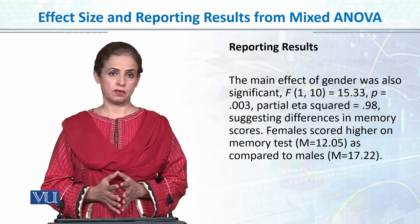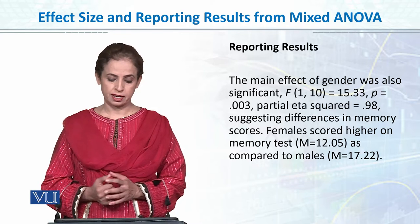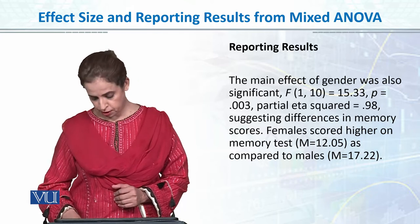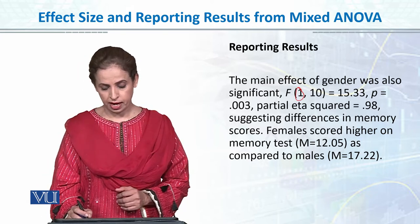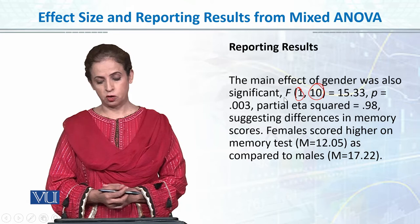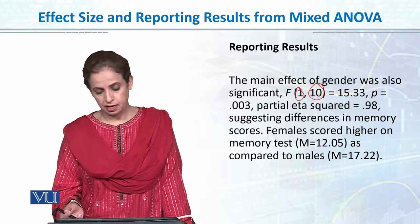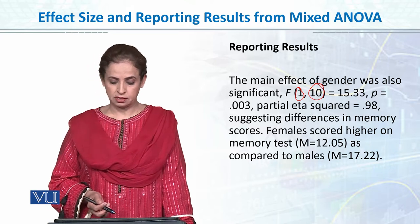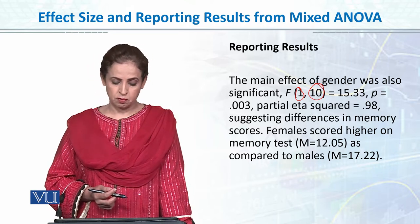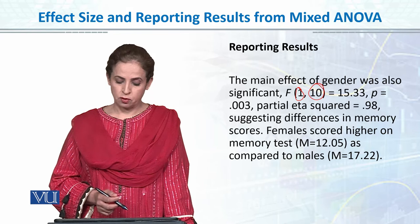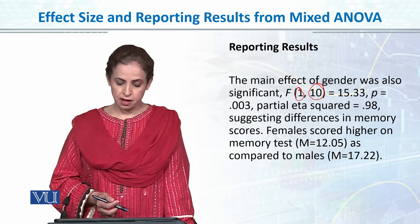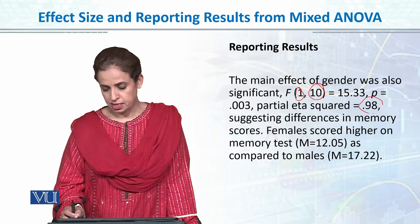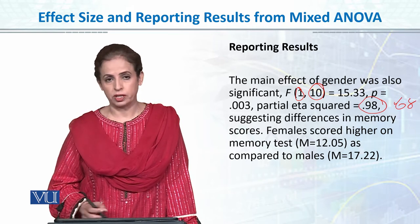Finally, our second independent variable, gender: the main effect for gender was also significant. Report the F value with degrees of freedom — between and error degrees of freedom 15.33 — p = 0.003, partial eta square = 0.605, suggesting differences in memory scores. Females scored higher on the memory test (mean = 12.05) as compared to males (mean = 0.68).